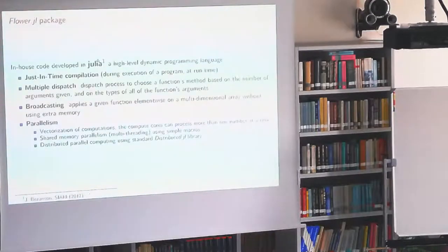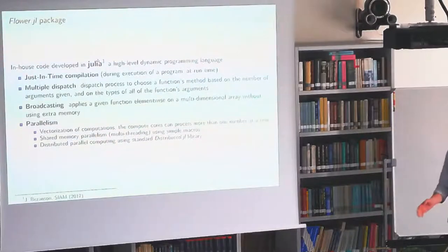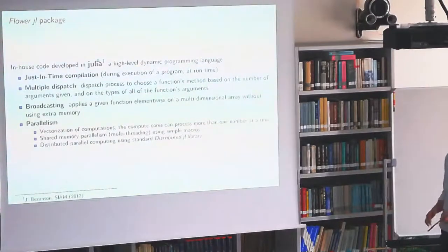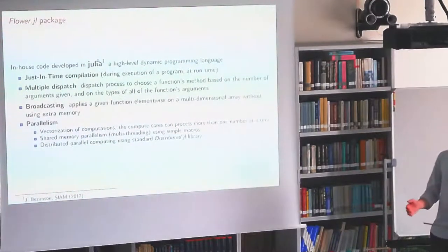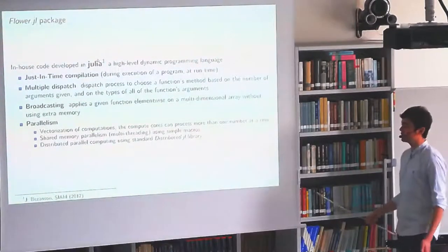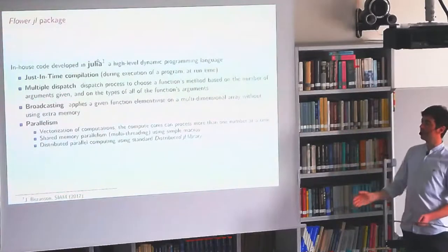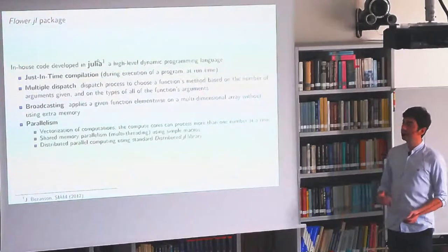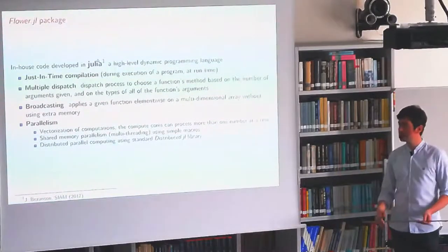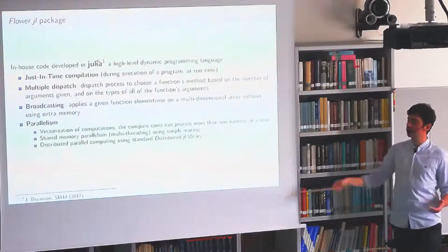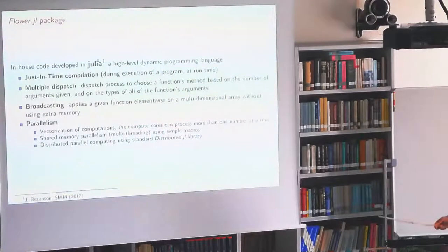We developed a package written in Julia, a high-level dynamic scientific language. Its key characteristics include just-in-time compilation at runtime, multiple dispatch where the function method is chosen based on argument types, broadcasting to apply functions element-wise, and easy parallelization. We have different levels of parallelism: vectorization (single instruction multiple data), shared memory parallelism via multi-threading with simple macros, and distributed parallel computing similar to MPI. We currently use shared memory parallelism with good scaling results.